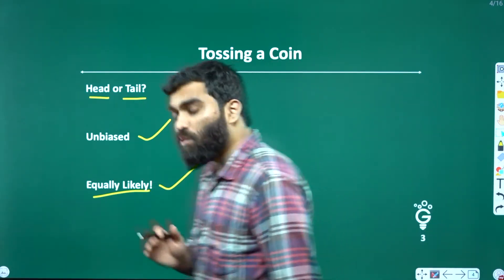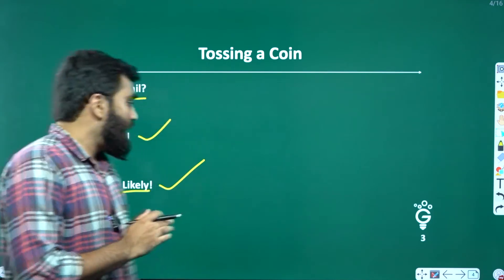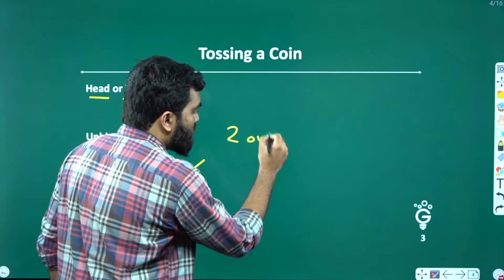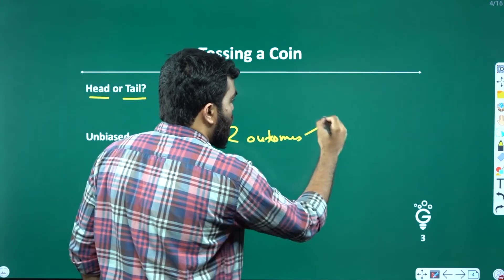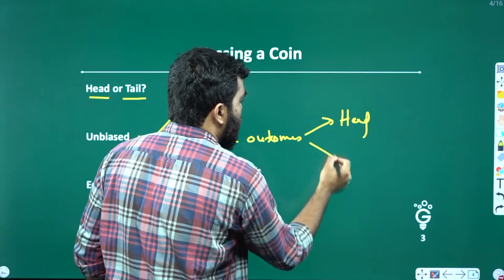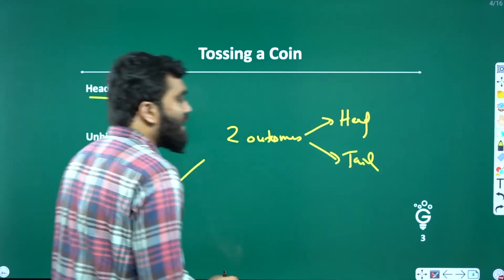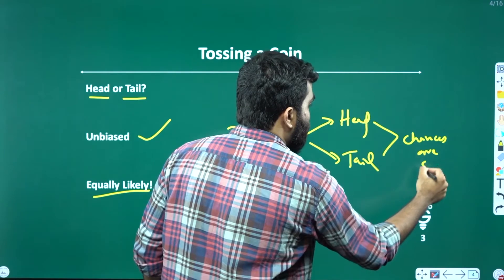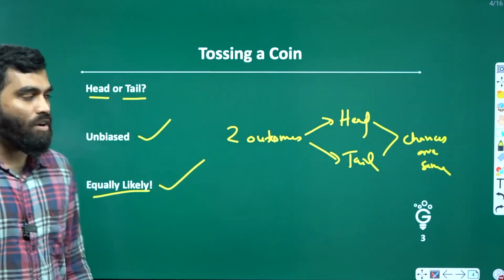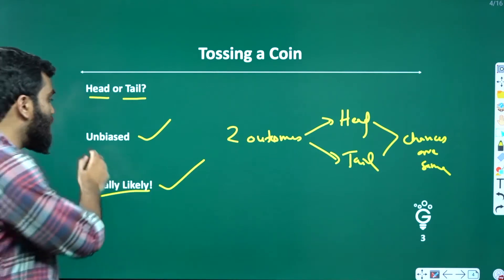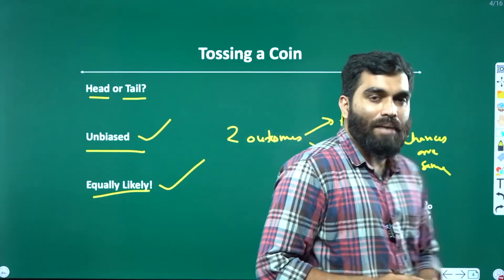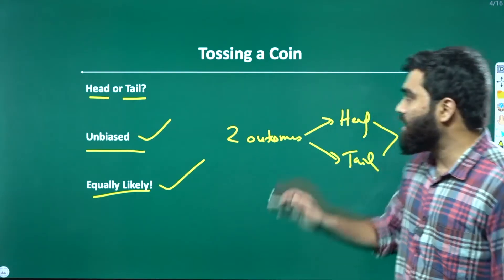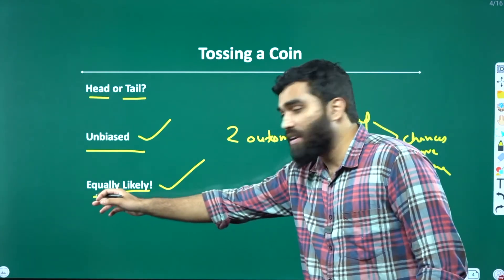Equally likely is a very, very important term in probability. What does it mean? Equally likely means, even if you get two outcomes — one is getting a head, one is getting a tail — two chances are the same, two chances are equal. This means we are using an unbiased coin, and these two outcomes are equally likely.